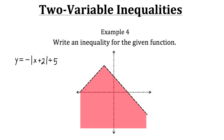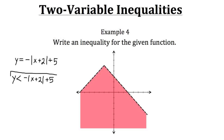But we need to actually get the inequality. Since we have dotted lines here, we know that it cannot be equal to. Since we have the shaded region below the function, we know it will be less than. So we write y is less than negative absolute value of x plus two, plus five. That would be the inequality for this particular graph.